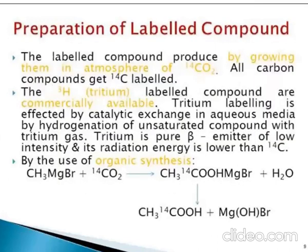For the preparation of labeled compounds, the labeled compound is produced by growing plants in an atmosphere of 14CO2. All carbon compounds get labeled with 14C. The labeled hydrogen, known as tritium (3H or T), is also used for labeling compounds.